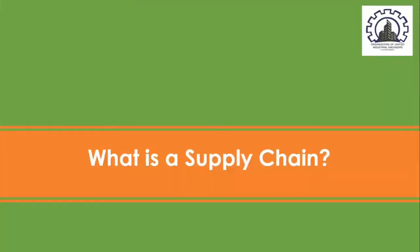Let us discuss the first key area of our lesson, which is the definition of supply chain. In Chapter One, it is an introduction to supply chains and why they are important to today's businesses. In a supply chain setup, products have to be moved from the point of origin — the farm or the mine — to the point of use, another organization, or the ultimate individual consumer. As businesses expand into global markets, they have also expanded their sources of supply throughout the world, and supply chains have become longer and more complex.